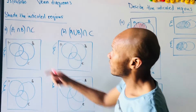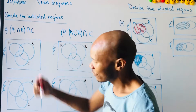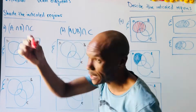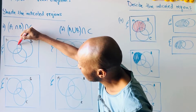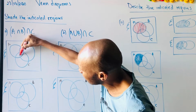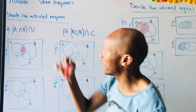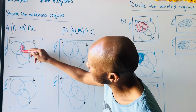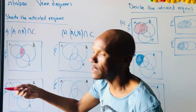So A intersection B — I'm going to shade A intersection B and draw lines. I use different colors: for A intersection B I'm going to draw lines in one color. A intersection B is the region that is common between A and B.